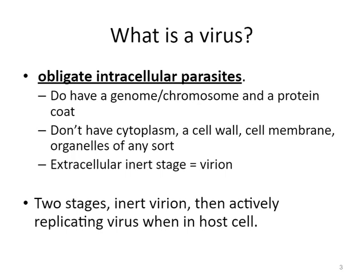Viruses have genomes that are organized into chromosomes and they have protein coats. They do not have cytoplasm, a cell wall, cell membranes, or organelles of any sort. When they are in their extracellular stage, they are inert or inactive — they behave simply as particles and are called virions. There are two stages to every virus: the stage where it is simply a particle exterior to a host cell, considered inert and called a virion, and the stage where it is actively replicating inside a host cell.